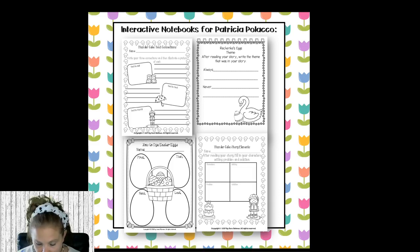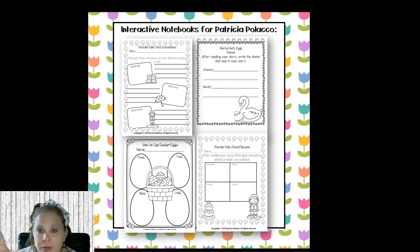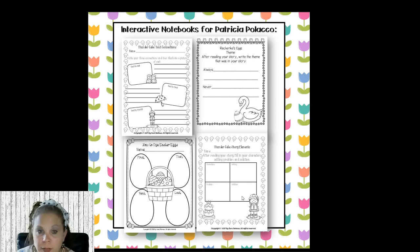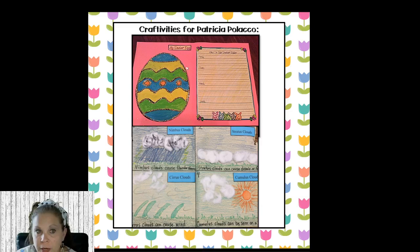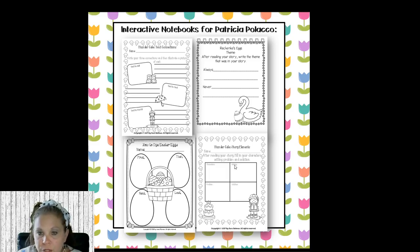These are some interactive notebooks I have for Rechenka's Eggs and Thunder Cake. For Thunder Cake, they illustrate a text-to-self connection, text-to-text, text-to-world, and write about them. They can also do story elements — character, setting, problem, solution. For Rechenka's Eggs, I have theme and how to dye Easter eggs, which can serve as a brainstorming page. You can click on the picture and it'll take you straight to the resource.